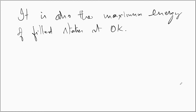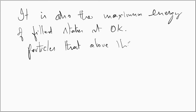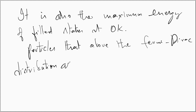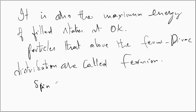It is also the maximum energy of filled states at 0 Kelvin. The particles that obey Fermi-Dirac statistics are called fermions. Fermions are those particles whose spin is half — an example is the electron. All fermions obey Pauli's exclusion principle.